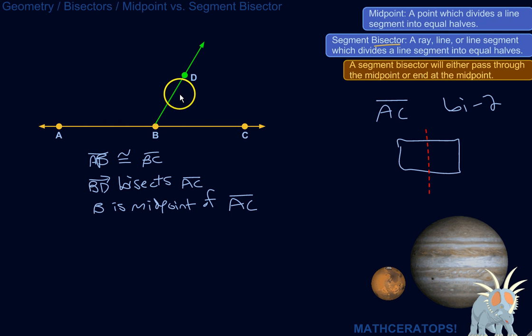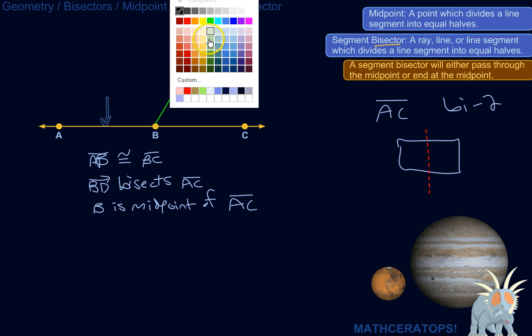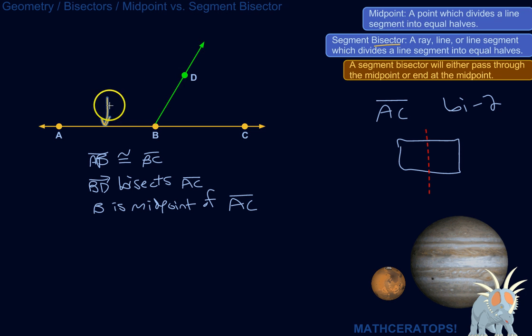So a ray, line, or segment, which splits or divides a line segment into equal halves. So basically, if this is a segment bisector, that would mean that the length of this half would be equal to the length of this half. Say like, maybe let's say it's 10 inches from A to C. This would be 5 inches, and this would be 5 inches also.